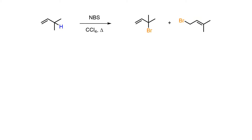It is possible to halogenate molecules at allylic positions via a free radical substitution pathway by using N-bromosuccinimide as the halogenating source. The formation of multiple products is explained by the delocalized carbon radical intermediate being trapped at either end of the allylic system.